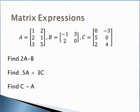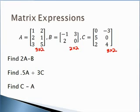Let's evaluate some matrix expressions. The first says to double the elements in A and then subtract B. Matrix A has three rows and two columns — a 3 by 2. Matrix B has two rows and two columns — a 2 by 2. Since the dimensions don't match, it is not possible to compute 2A minus B.